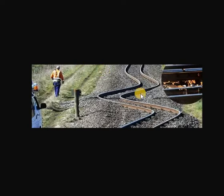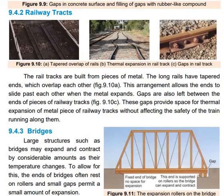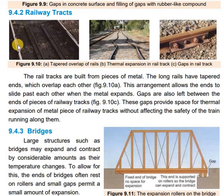Look at this another figure, where due to extreme heat the railway track has bent to such an extent. A train cannot pass over such a bent railway track — it will derail. So to prevent this, tapering overlaps are made at intervals along the railway tracks.